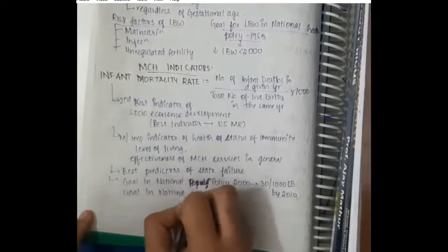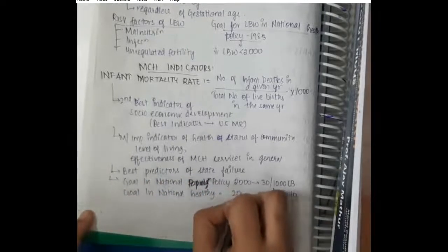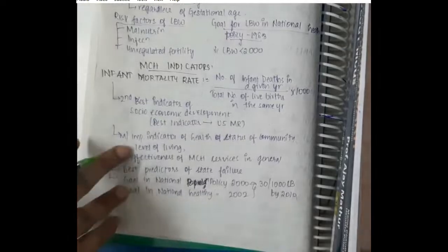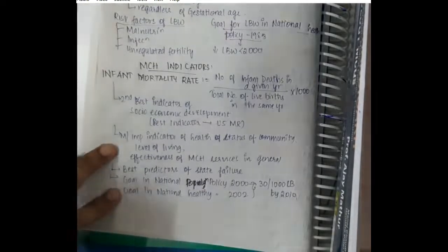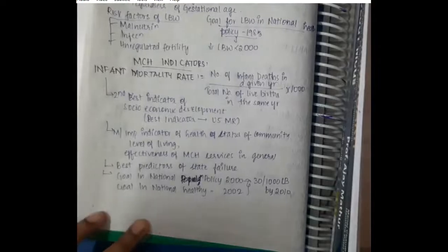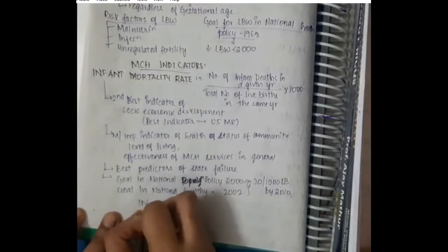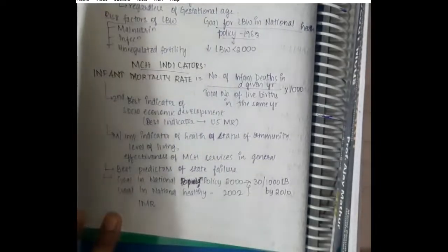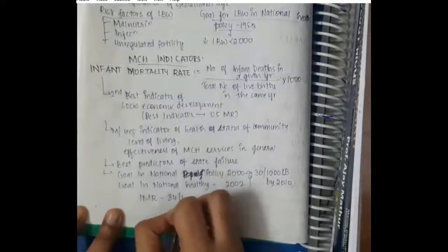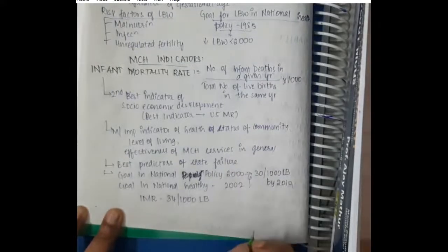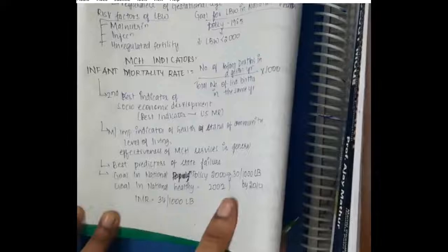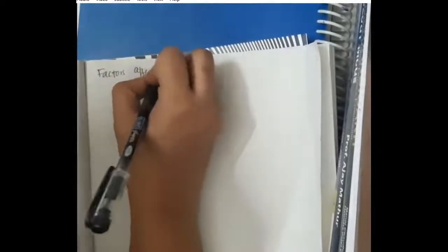Sorry, per 1000 live births by 2010. And the goal in national health policy 2002 is also 30 per 1000 live births by 2010. Infant mortality rate is 34 per 1000 live births. That means in every 1000 live births, 34 infants have died.